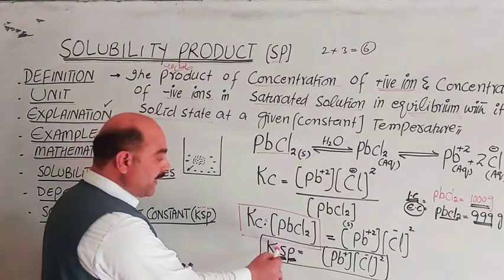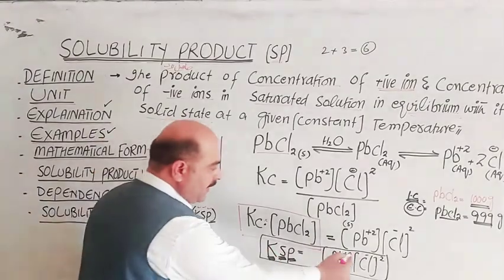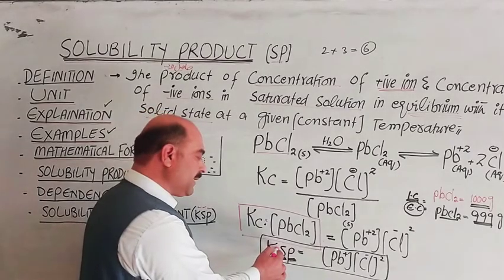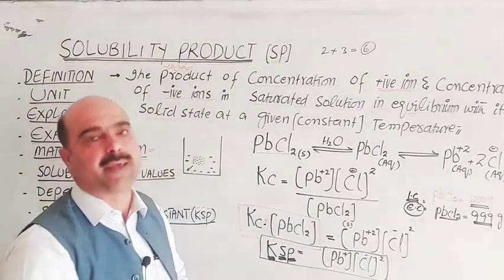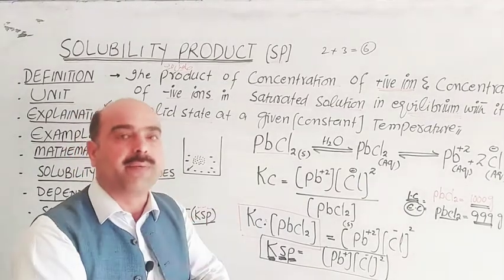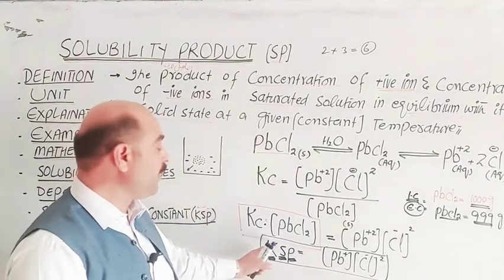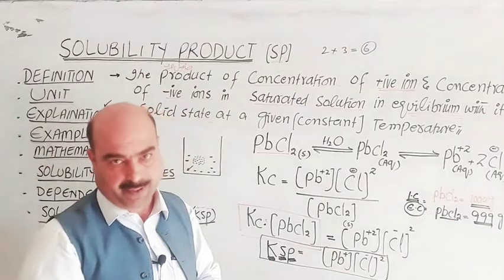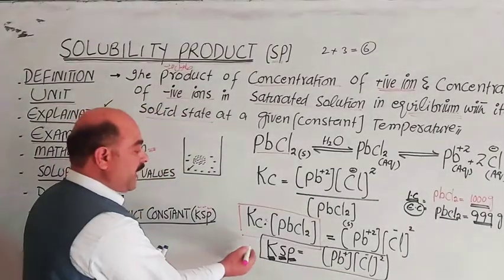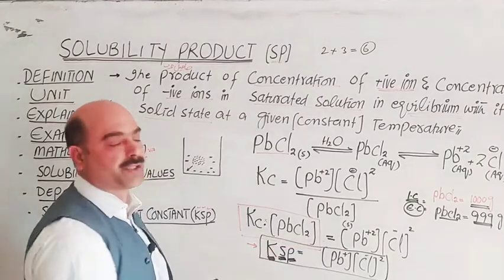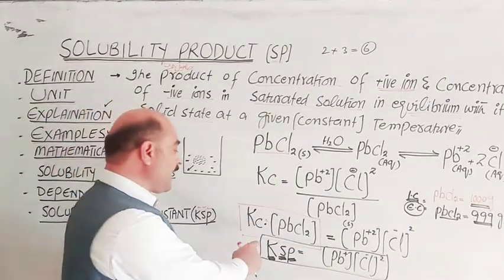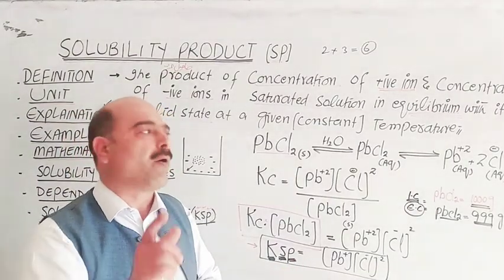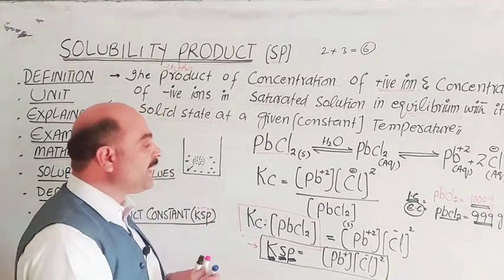There is a direct relation: higher the value of K_SP, higher will be the concentration of cations and anions in solution, and higher will be the solubility of that salt. Conversely, lower K_SP means lower solubility. K_SP values are typically expressed as powers of 10 with negative exponents — very small values.